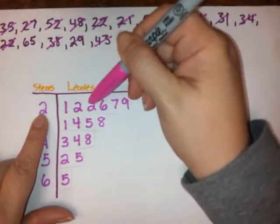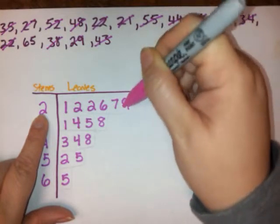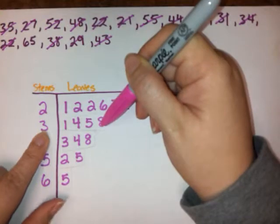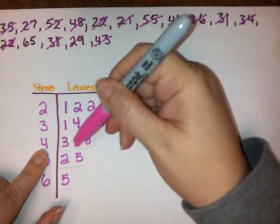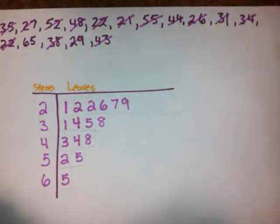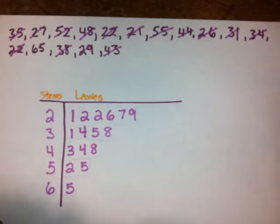All we're saying is this is the tens place and each one of these is a ones place for something that we had. So we had a 21, a 22, a 22, a 26, a 27, and a 29. 31, 34, 35, 38, 43, 44, 48, 52, 55, and 65. And that took care of all of the data that we had up here. That is how to construct a stem and leaf plot from a set of data.